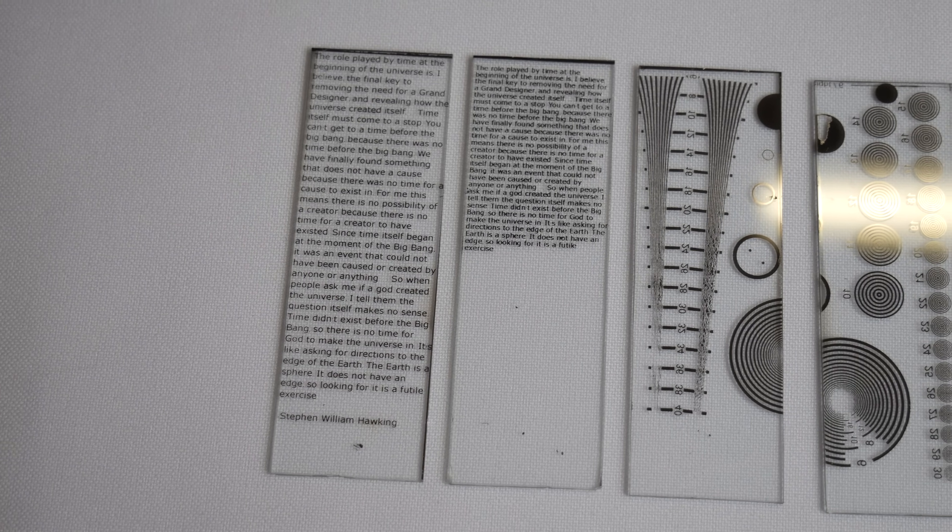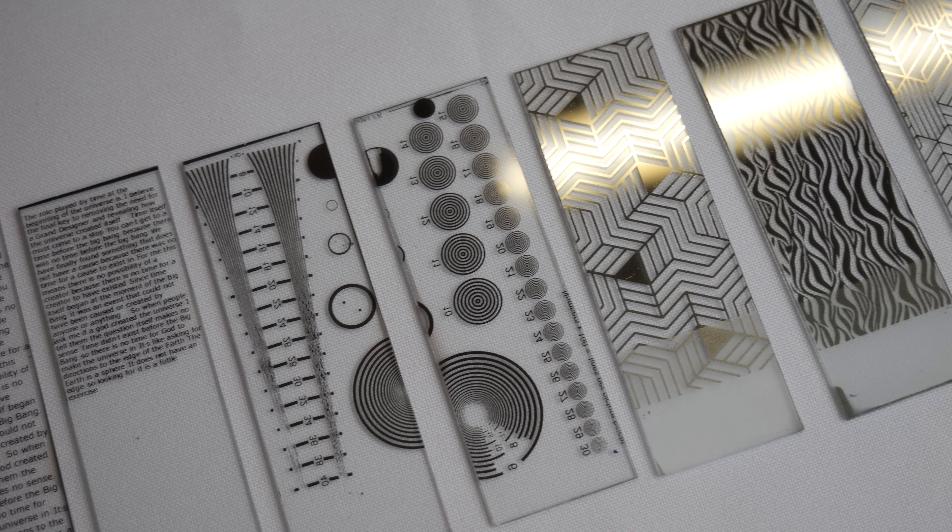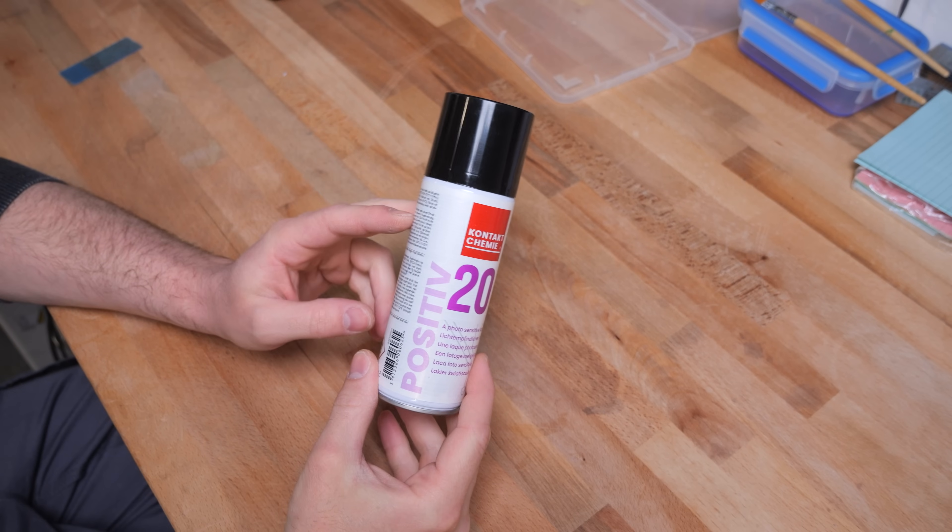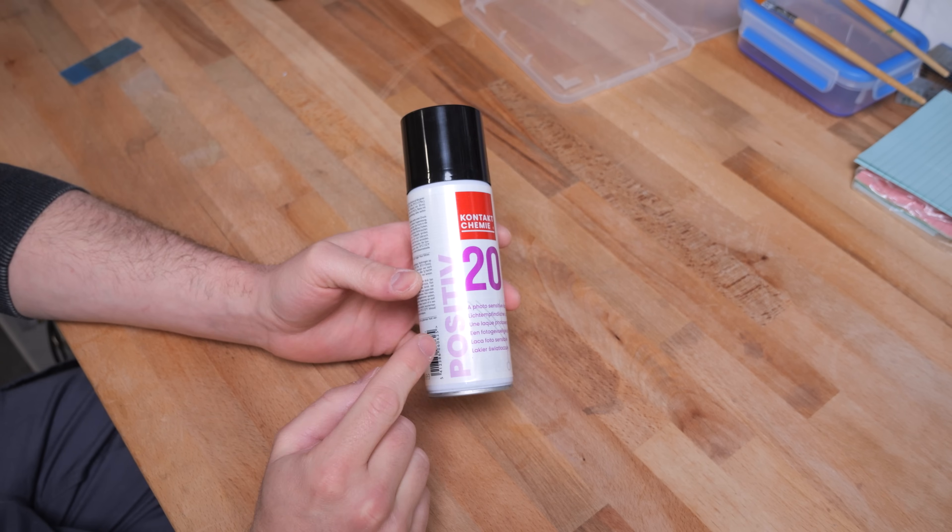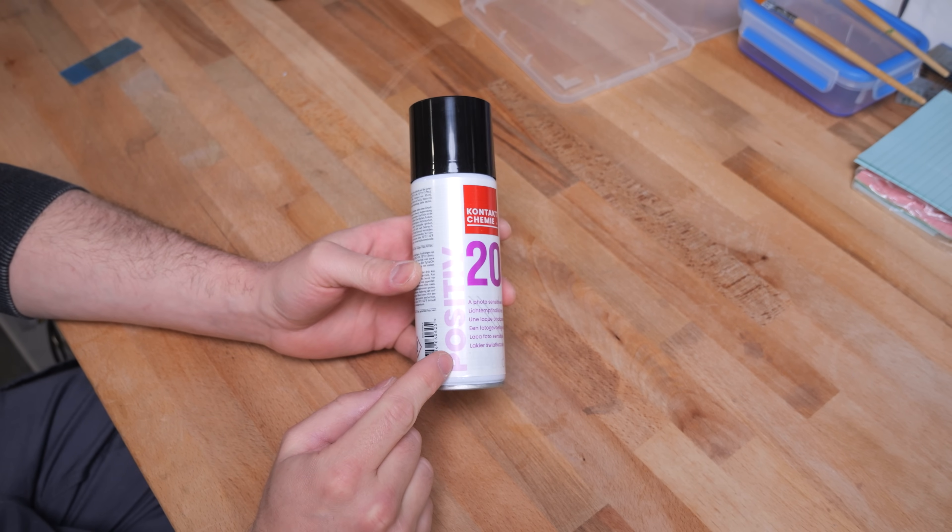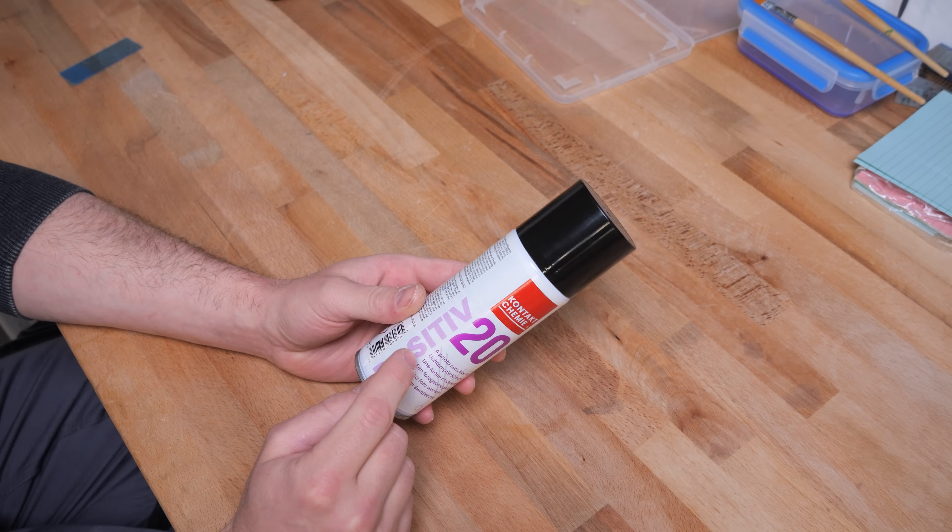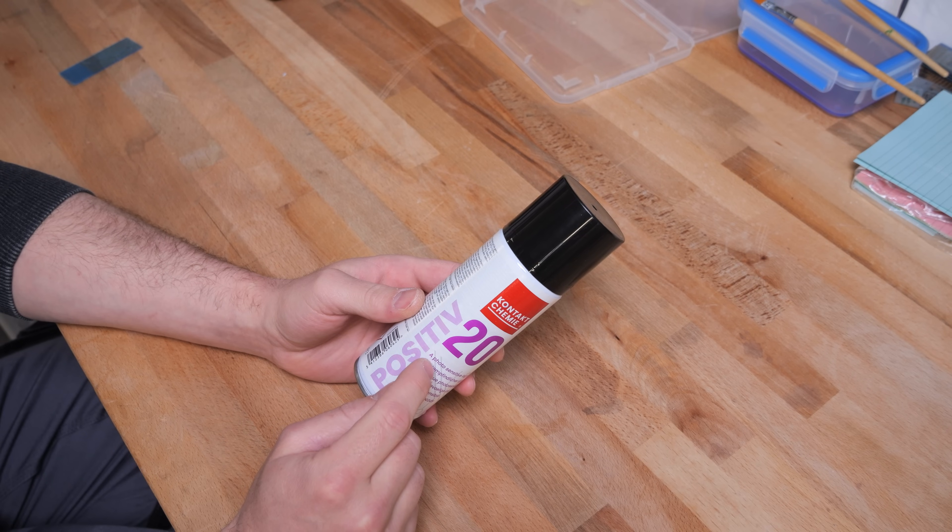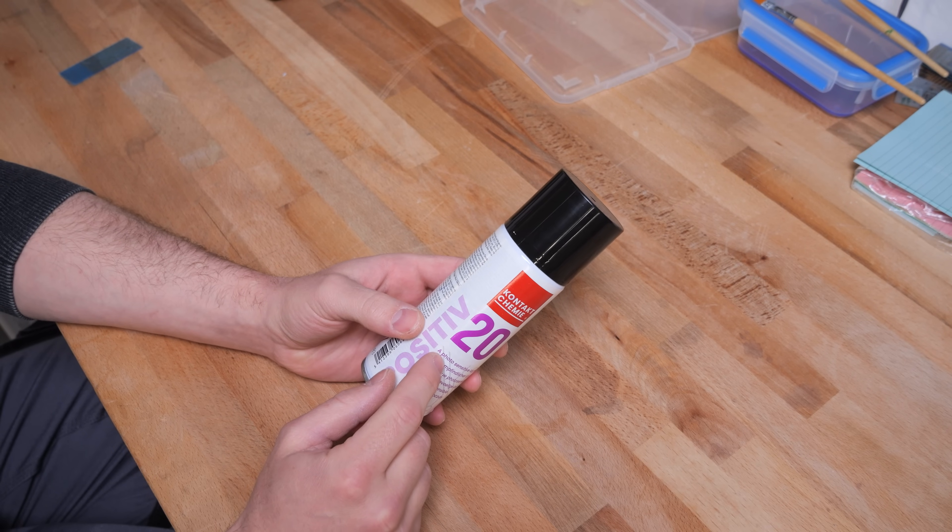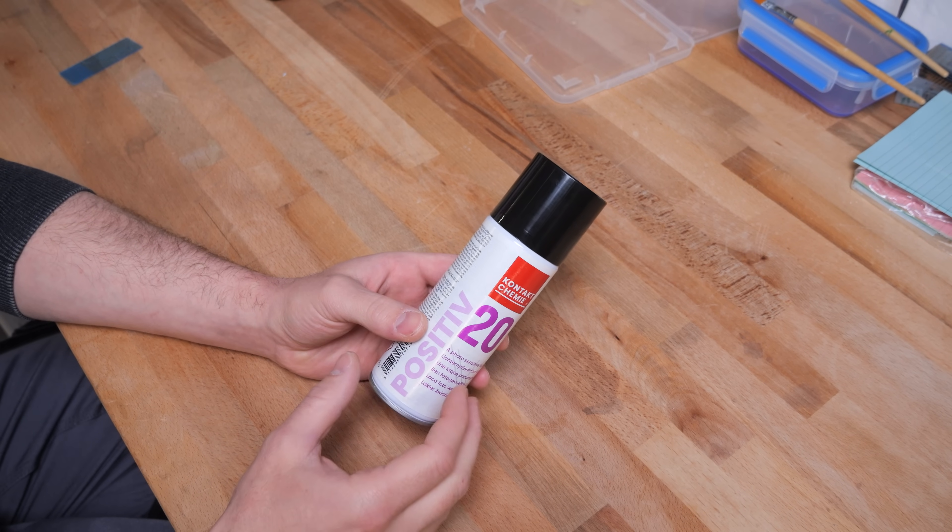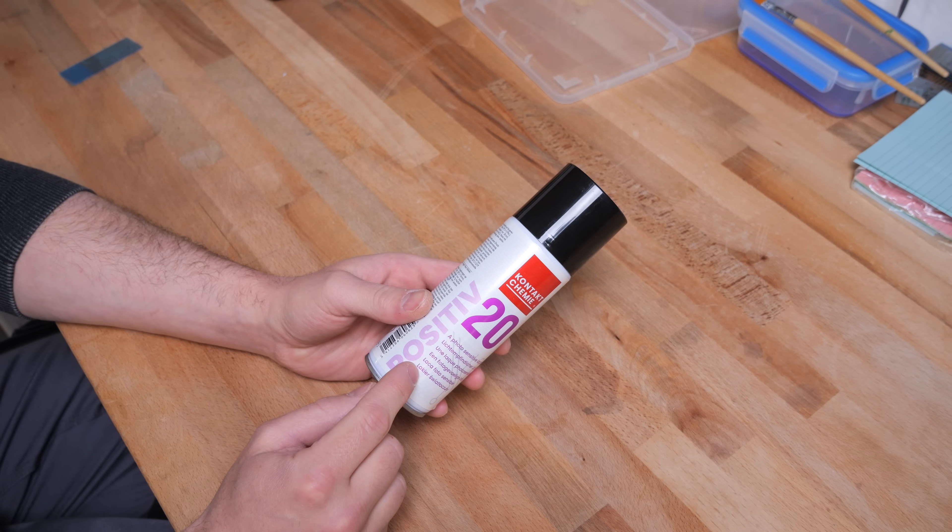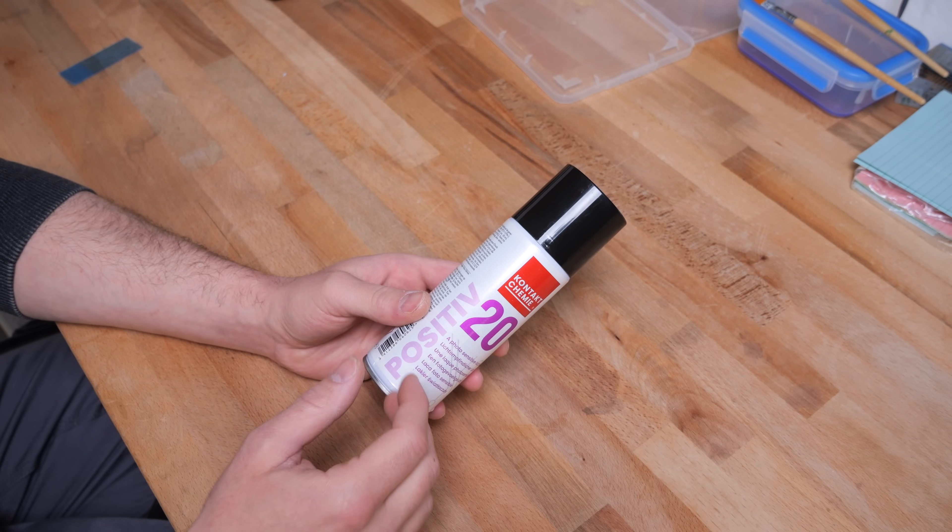My new method utilizes a photoresist, enabling me to create very fine structures as well. A photoresist is a special type of lacquer that is sensitive to UV radiation. There are positive and negative photoresists. Positive photoresist means that the area which has been exposed to UV radiation will get soluble in a developing solution, in my case potassium carbonate in distilled water. Negative photoresist means that the area that has been exposed won't be soluble in this developing solution.